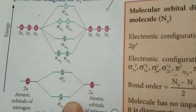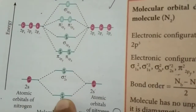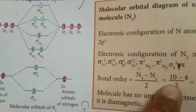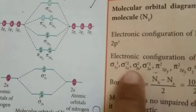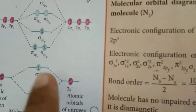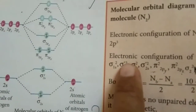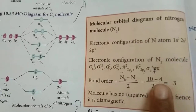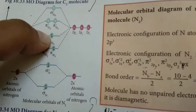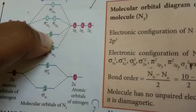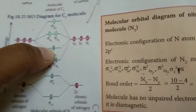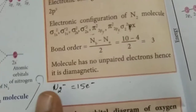Now calculate bond order: Nb minus Na divided by 2. Bonding orbital electrons: σ1s² + σ2s² + π2px² + π2py² + σ2pz² = 4 + 6 = 10 (including KK shell, that gives 8 + 2 = 10). Antibonding orbital electrons: σ*1s² + σ*2s² = 2 + 2 = 4. Bond order = (10 minus 4) divided by 2 = 3. The molecule has no unpaired electrons, so it is diamagnetic, and the bond order is 3, indicating a triple bond.